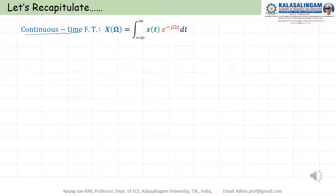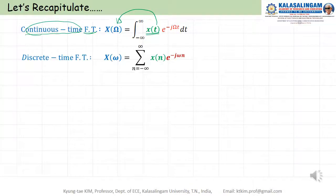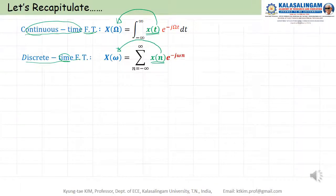Continuous time Fourier transform means we take a continuous time signal and want to change from the time domain to the frequency domain — we call this continuous time Fourier transform. And discrete time Fourier transform takes a discrete time signal and we want to change time to frequency — we call this discrete time Fourier transform.